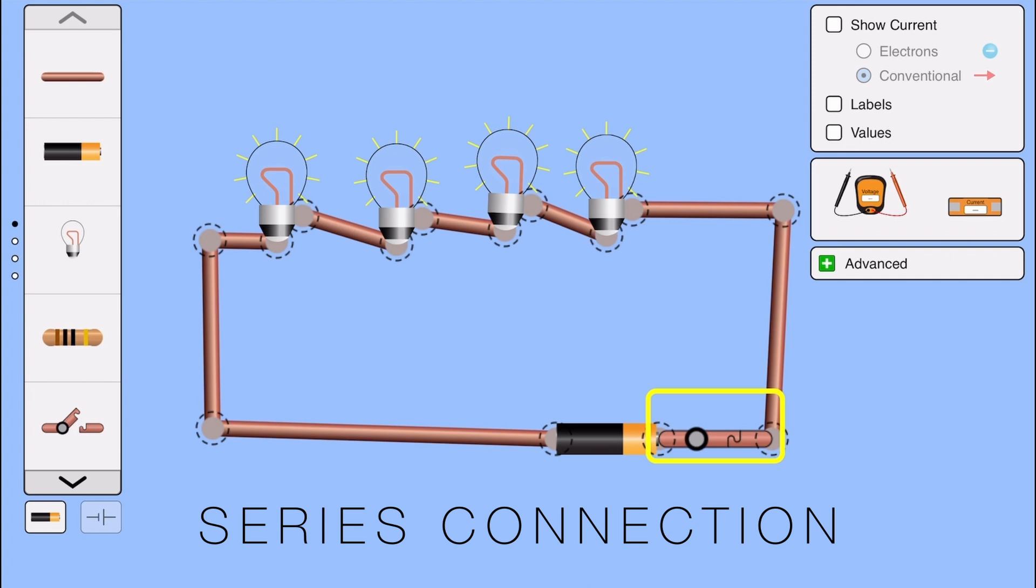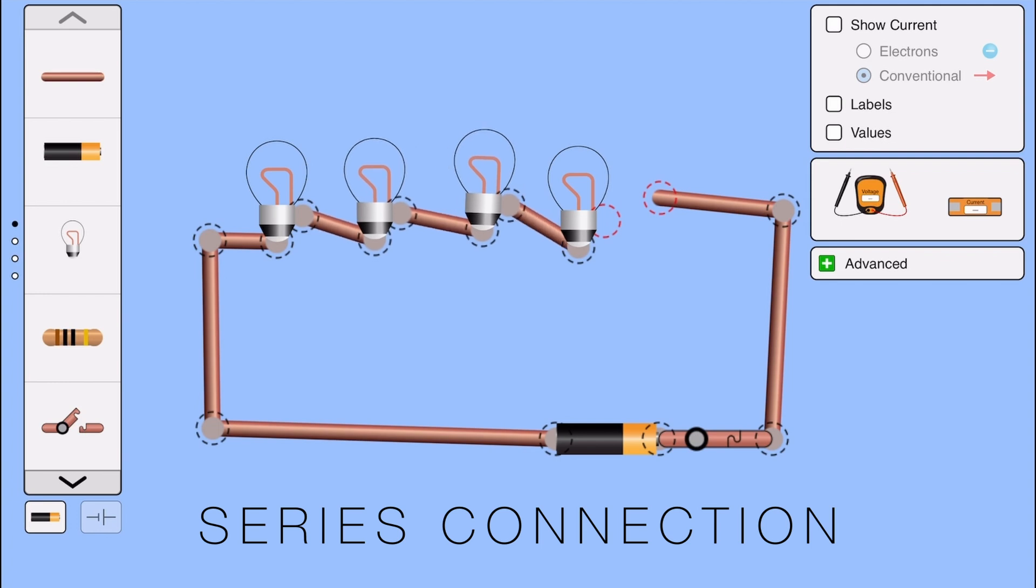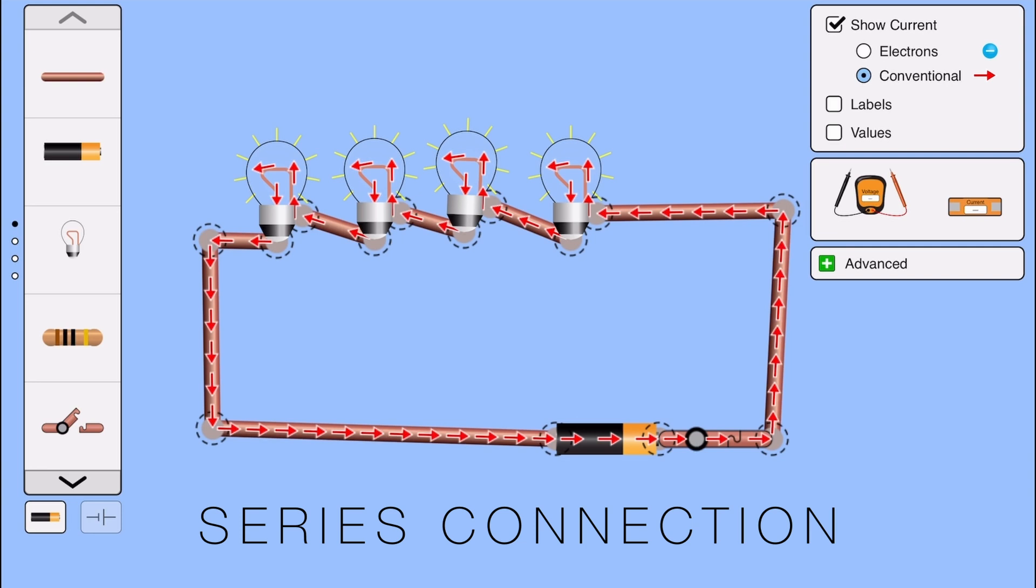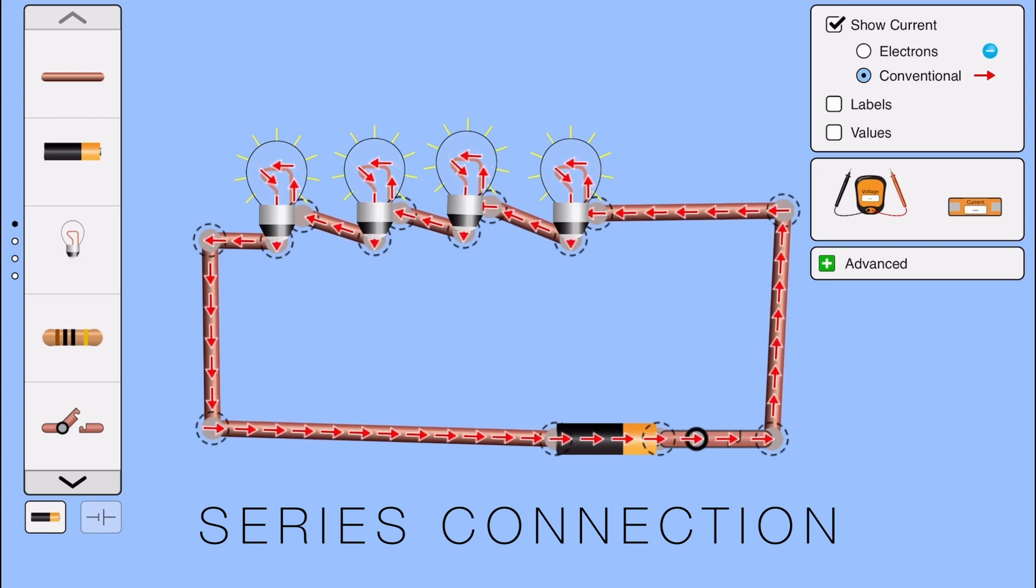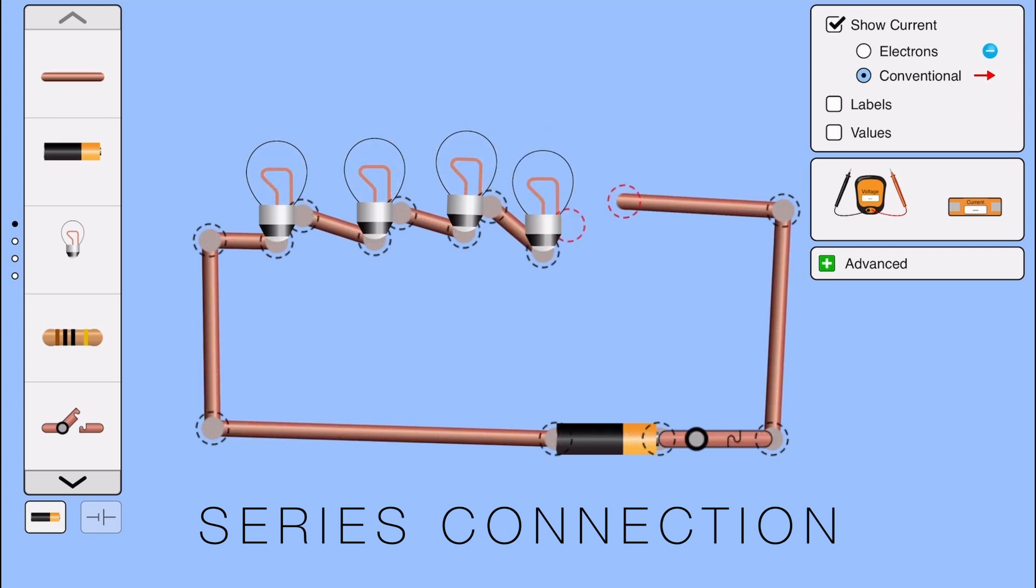But here is the tricky part. What happens if I remove one bulb from the series or if I disconnect one bulb from the series? Let's try it. Oh, look at that. The entire chain goes off. The whole thing shuts down. Why? Because in series connection, the current has only one single path to flow. It goes from one bulb to the next, to the next, and finally back to the battery. If one bulb is removed or stops working, that single path is broken and current can't complete its journey.